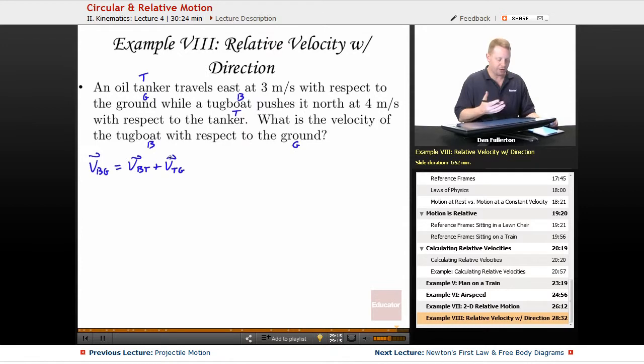Drawing these out, the tanker travels east at 3 meters per second with respect to the ground. So the tanker with respect to the ground, VTG, is 3 meters per second.